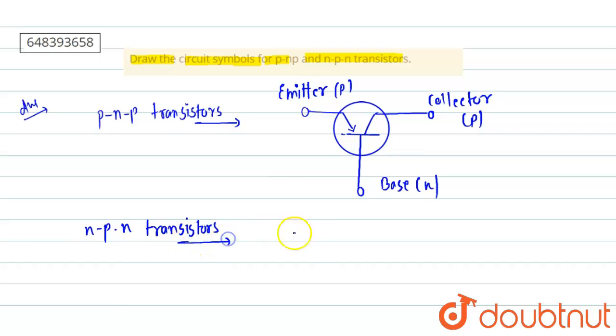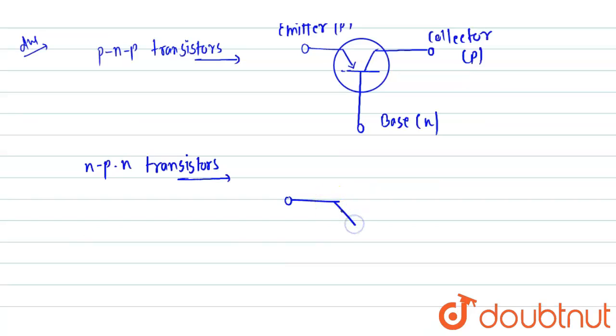In NPN transistor, it will be like something that... and this is called collector. From here it will be like something that, and all this structure is in a circle.